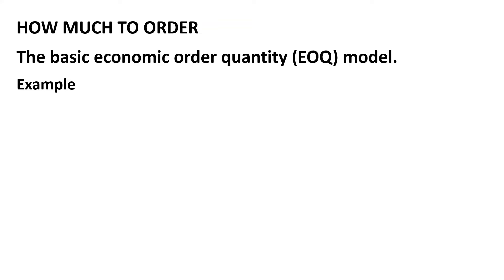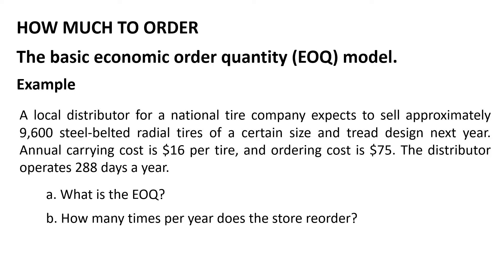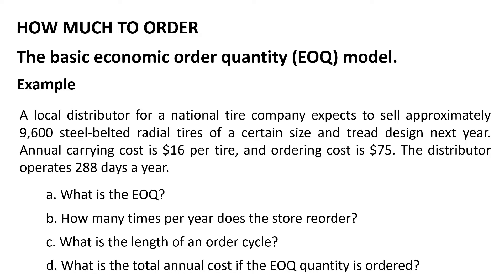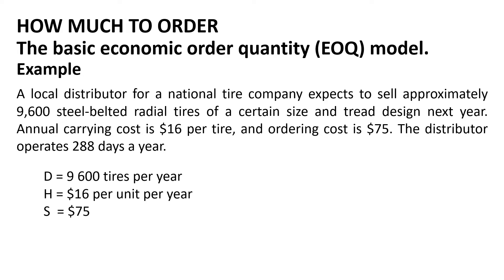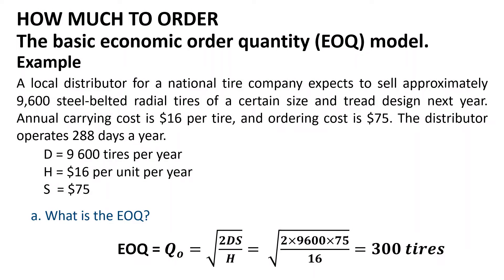Let us now solve an example. A local distributor for a national tire company expects to sell approximately 9,600 steel-belted radial tires next year. The annual carrying cost is $16 per tire, and the ordering cost is $75. The distributor operates 288 days a year. The givens are: D = 9,600 tires per year, H = $16 per unit per year, and S = $75. Using Q₀ = √(2DS/H) and substituting the given values, Q₀ = 300 tires.